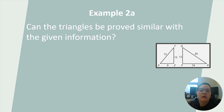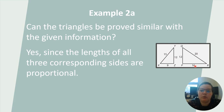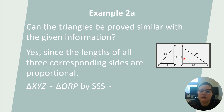Can the triangles be proved similar with the given information? We have side lengths of 15, 12, and 9 versus 20, 16, and 12. Finding corresponding ratios: 15 over 20 equals 0.75, 9 over 12 equals 0.75, and 12 over 16 equals 0.75. The lengths of all three corresponding sides are proportional, so triangle XYZ is similar to triangle QRP, proved by the side-side-side similarity theorem.